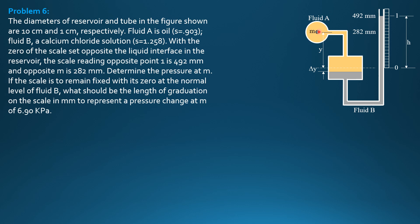We sum up pressure from point M down to the interface, then we jump across because the pressure here is the same as here. Then we rise, then equate to pressure here with zero. So pressure at M plus fluid A, specific weight of fluid A is 0.903 times 9.81 times 0.82 plus delta Y. So we are now here.